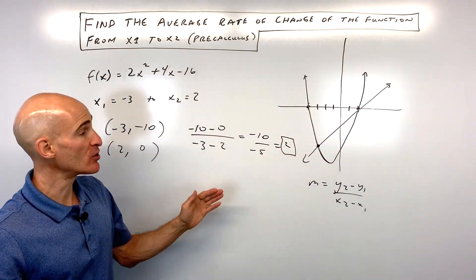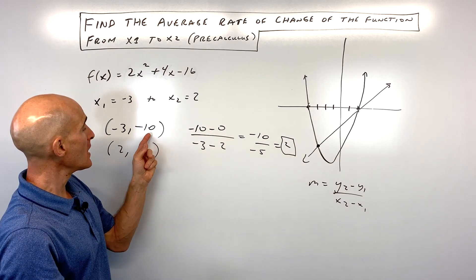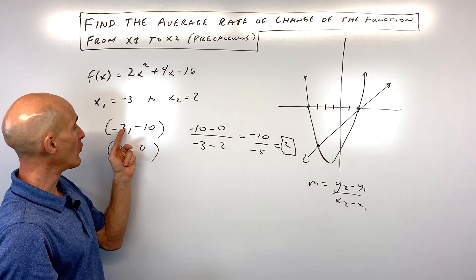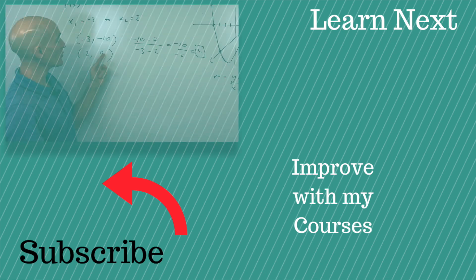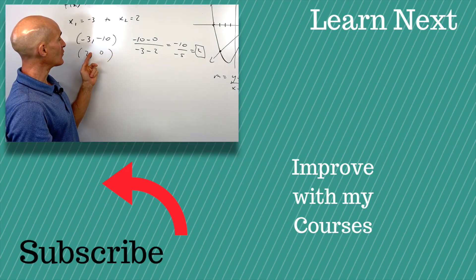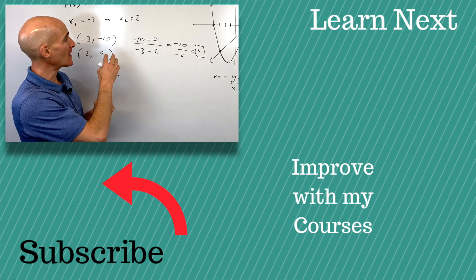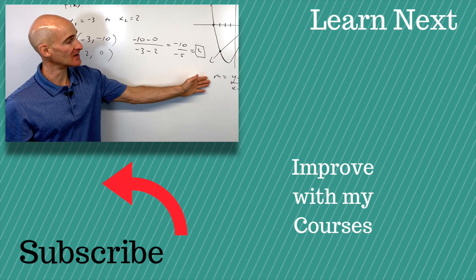When you're doing this, be careful about the order: y₂ - y₁ over x₂ - x₁. Or you could do it the other way: 0 - (-10) over 2 - (-3), but you want to stay consistent. You don't want to change the order midway, otherwise you're going to get the wrong slope.